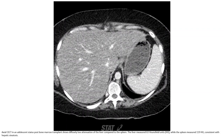On contrast CT in a patient with high-grade steatosis, there is diffuse low attenuation of the liver compared to the spleen. The liver measured 63 Hounsfield units while the spleen measured 190 Hounsfield units, consistent with hepatic steatosis.